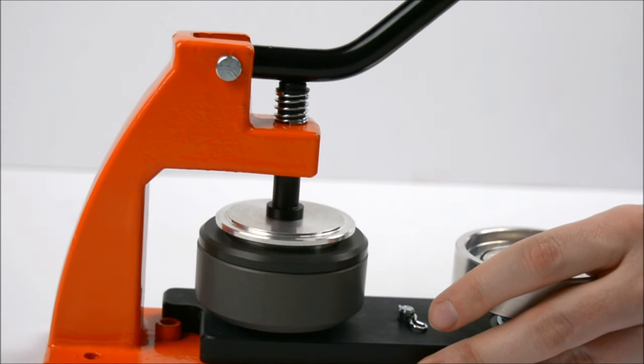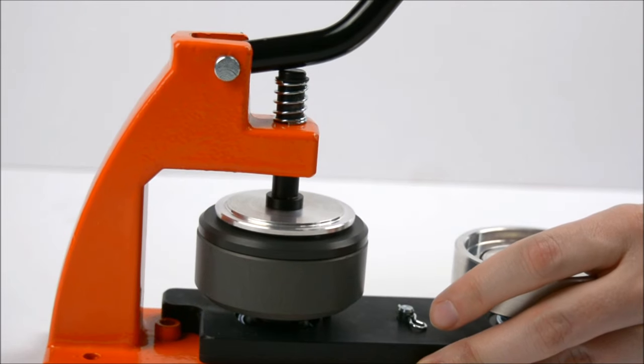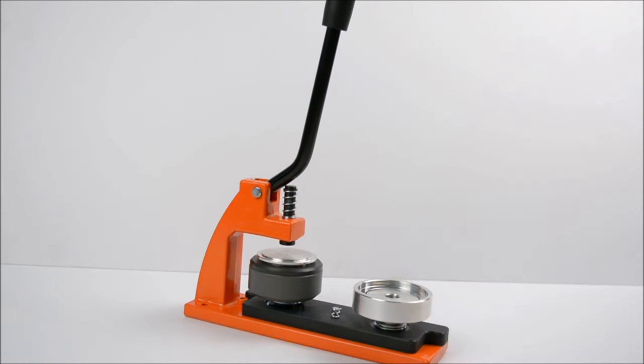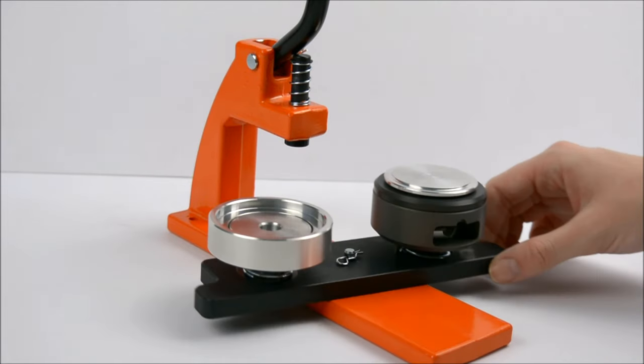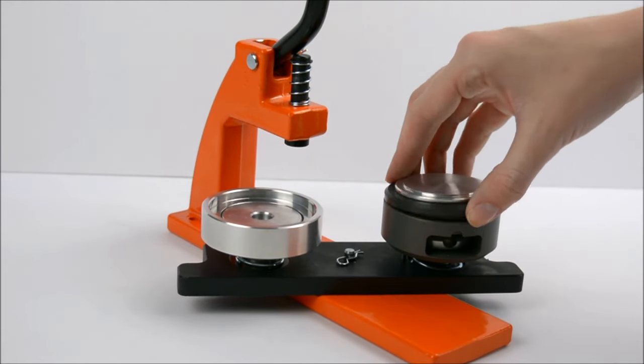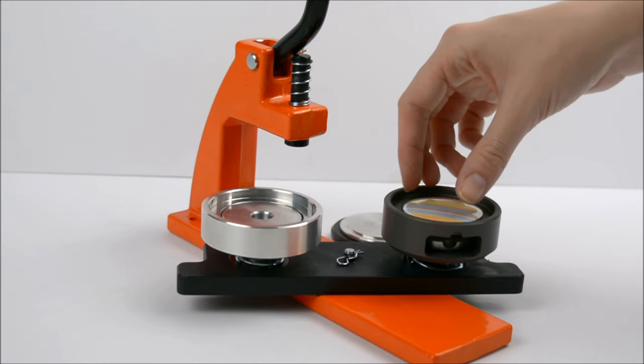As you can see, the top hat should be pushed all the way down onto the die to ensure the badge makes correctly. Lift off the grey ring and top hat and your badge is complete.